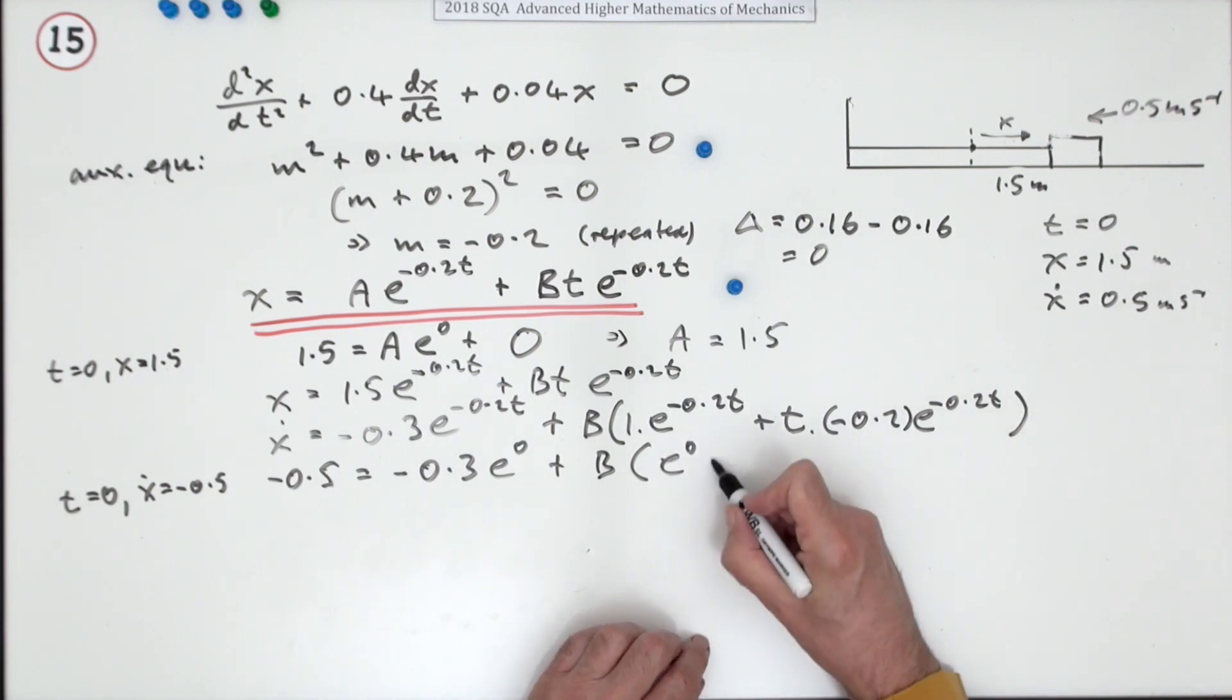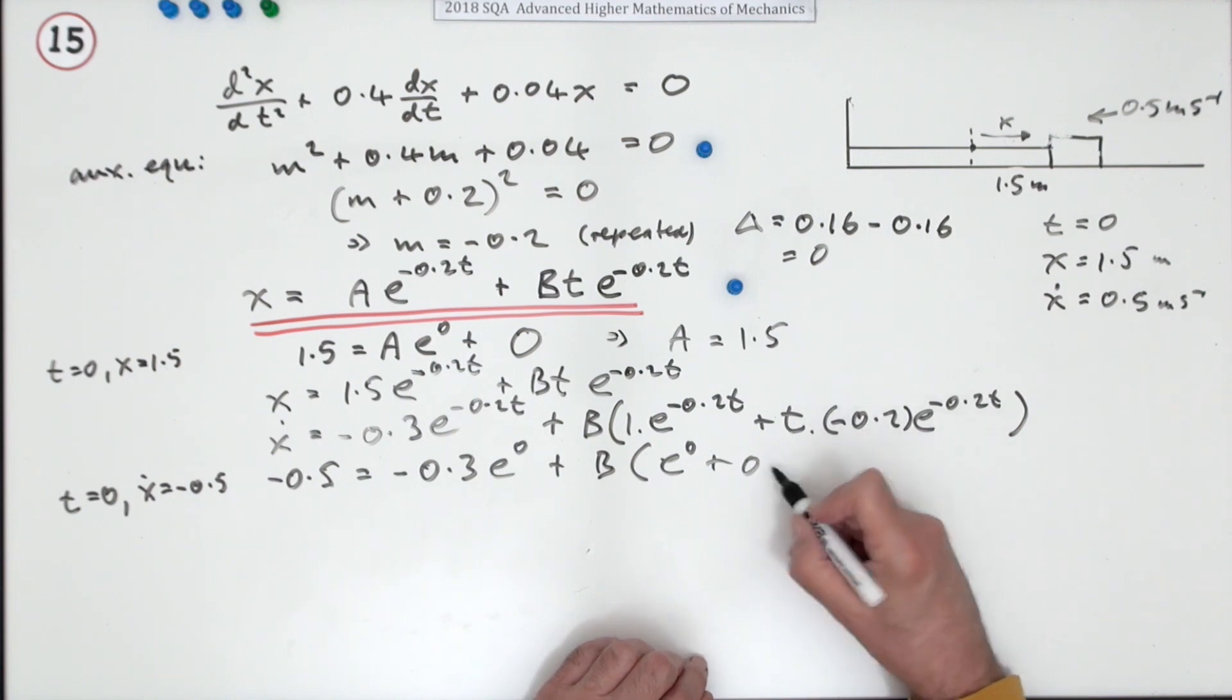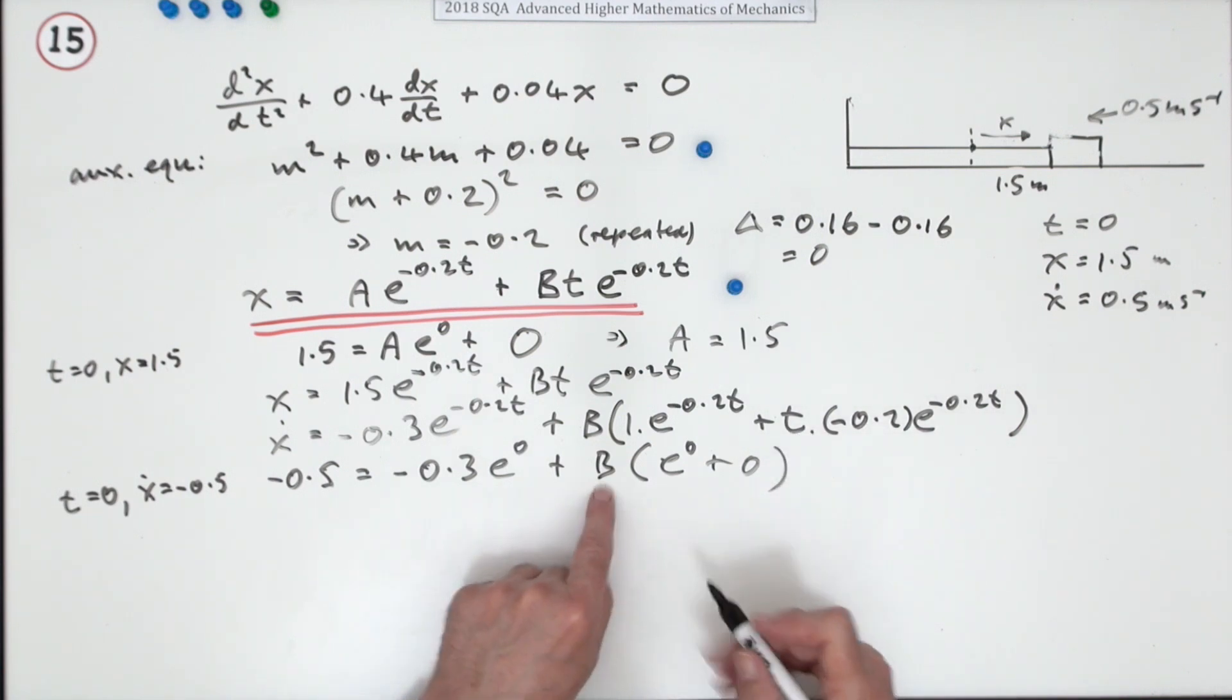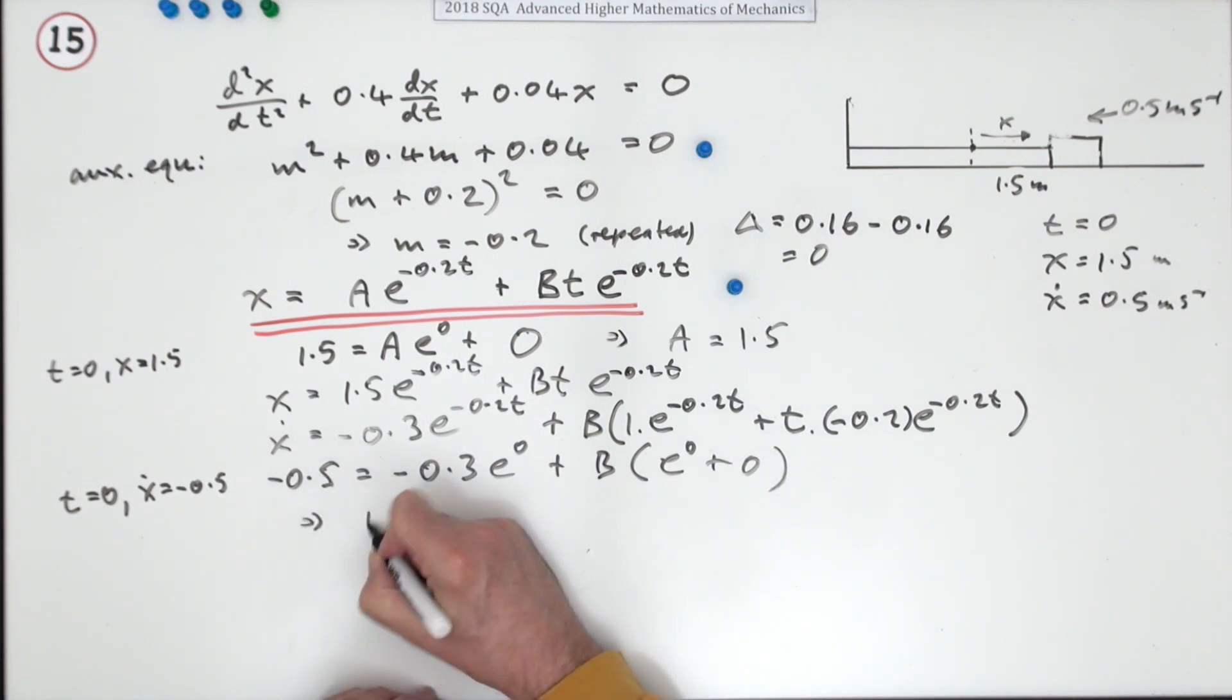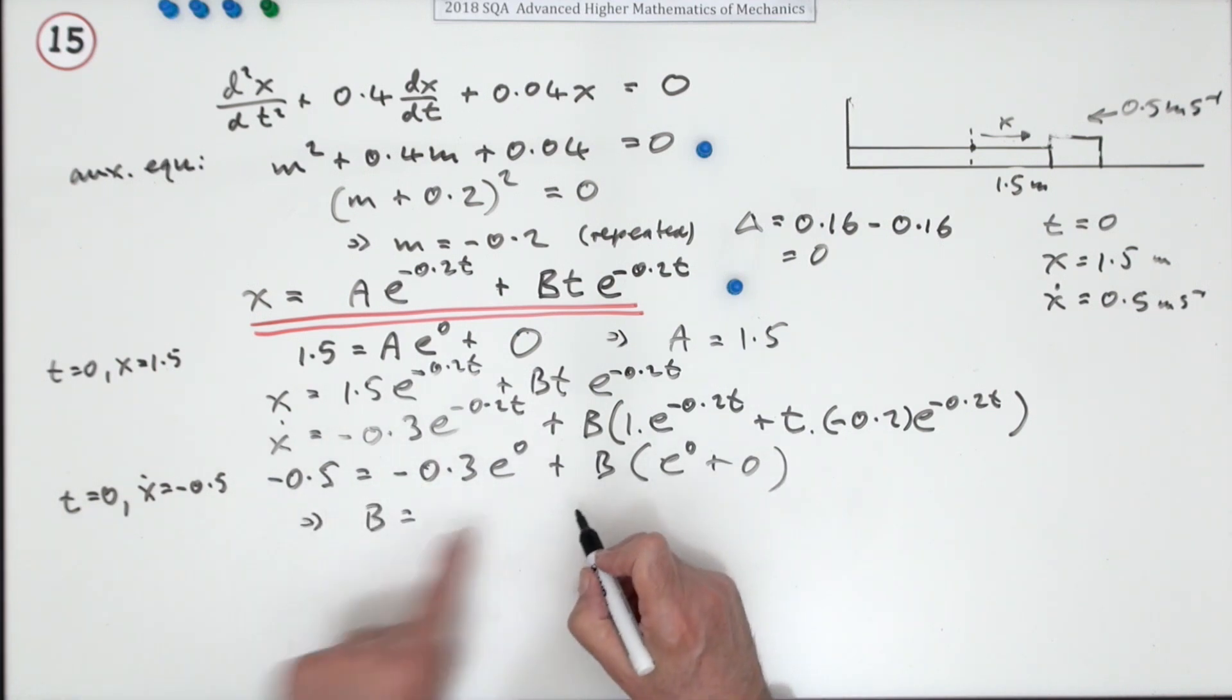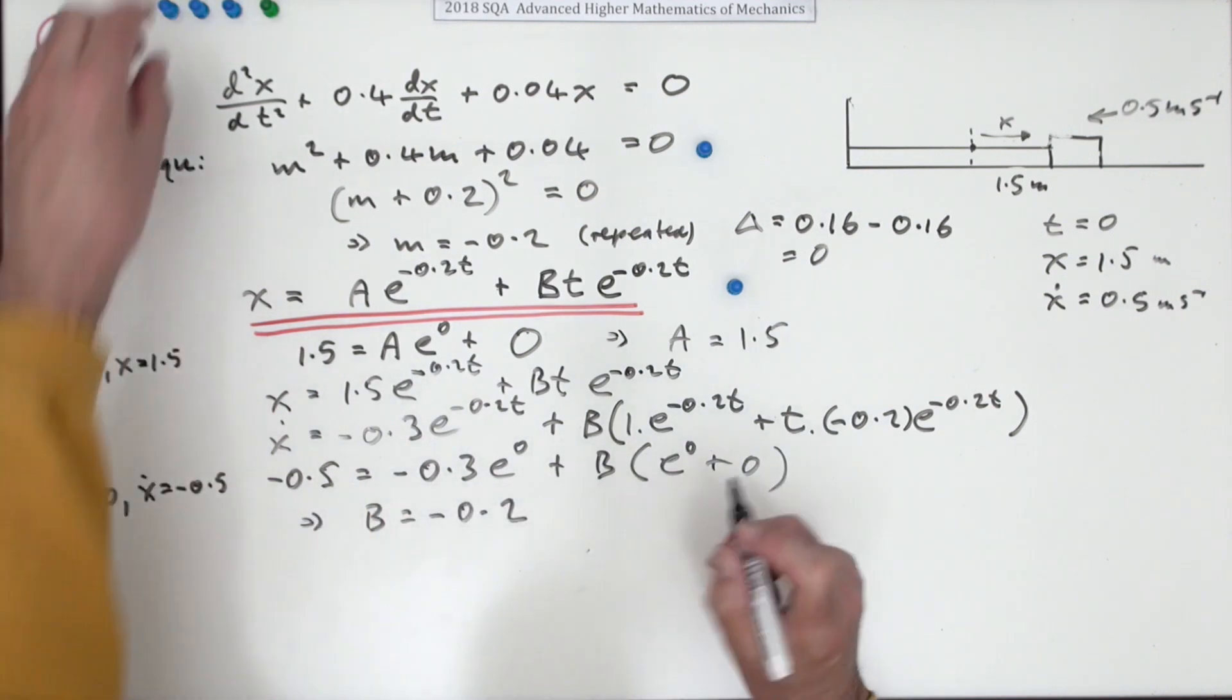That's going to be negative 0.3e to the 0, plus B times... that's e to the 0, and that whole thing's just 0 because it's t times it. Doesn't matter what that lot is, because 0 times anything is 0. So that simplifies that right down.